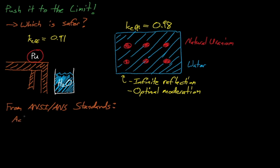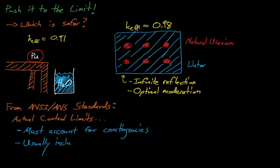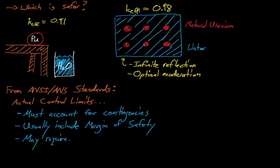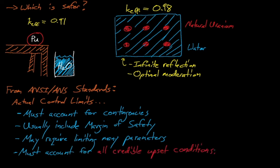So from the ANSI ANS standards, actual criticality safety control limits must account for various contingencies. You can't just model nominal conditions. And in fact, we must design around all credible upset conditions and ensure that none of these conditions will cause our system to exceed the subcritical limits. These limits will also usually include margins of safety, and when all is said and done, maintaining a safe configuration may require controlling a large number of parameters that affect the system's critical state.